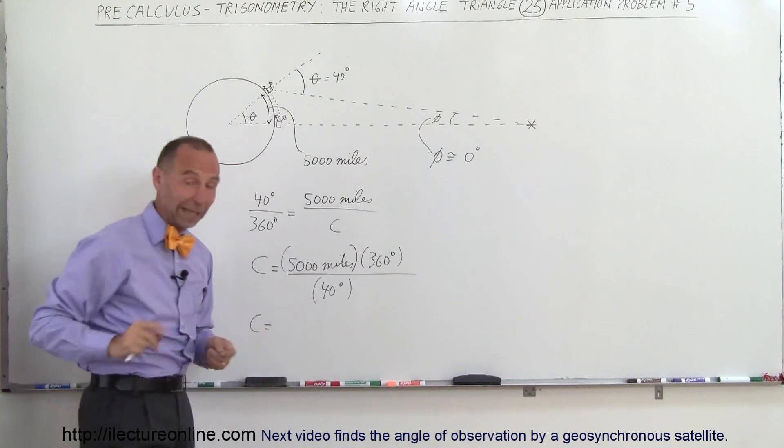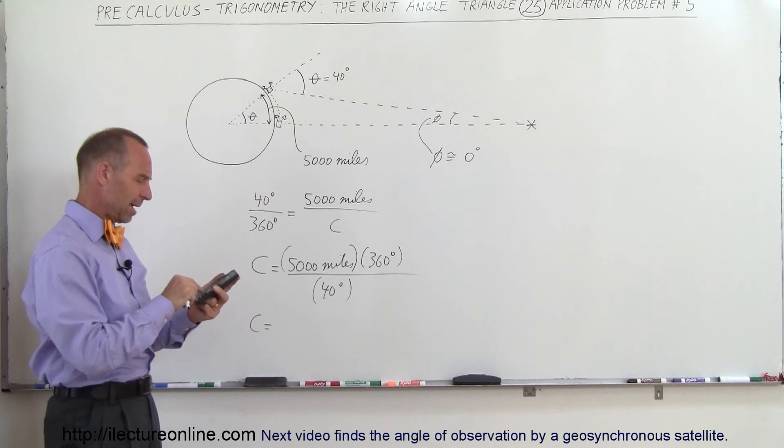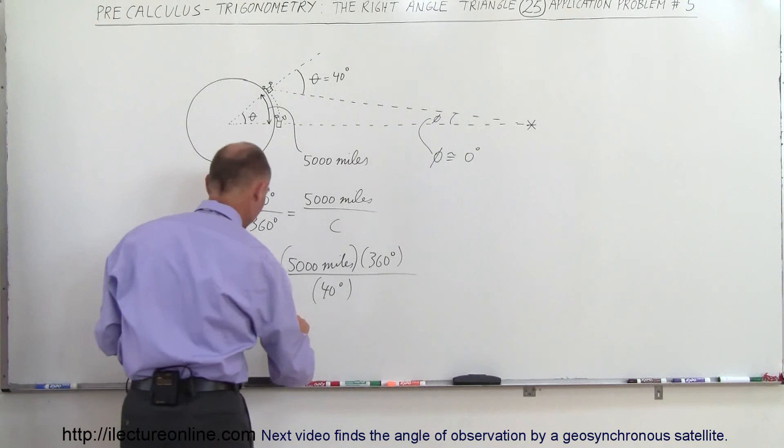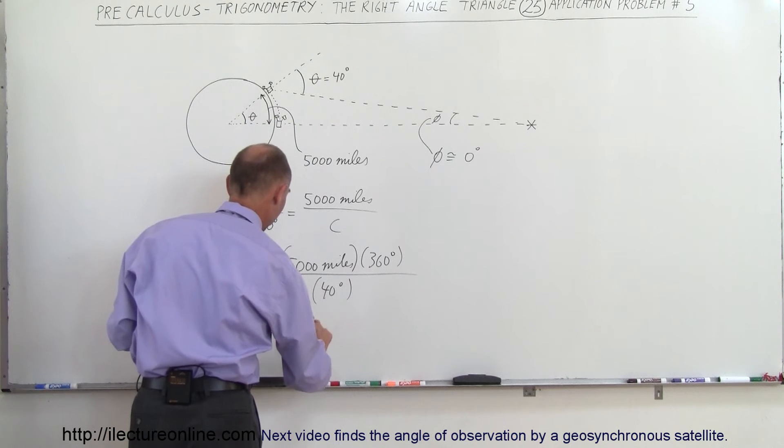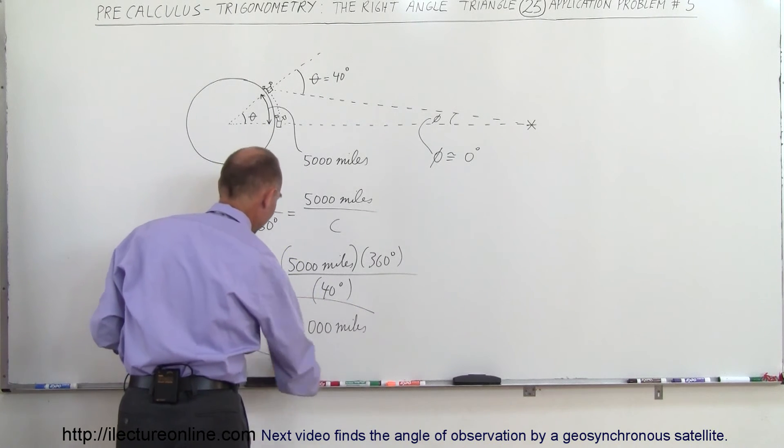And that should give us the circumference of that unknown planet. So we go 5,000 times 360 divided by 40, and it shows that the unknown planet has a circumference of 45,000 miles. Definitely not the Earth—it's a lot bigger than the Earth.